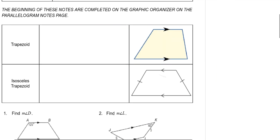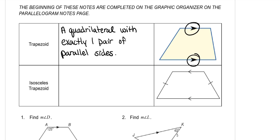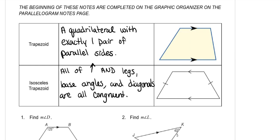A trapezoid is a quadrilateral with exactly one pair of parallel sides. An isosceles trapezoid is a quadrilateral with exactly one pair of parallel sides, but also the legs are congruent, base angles are congruent, and the diagonals are congruent. The legs are the sides that are not parallel.